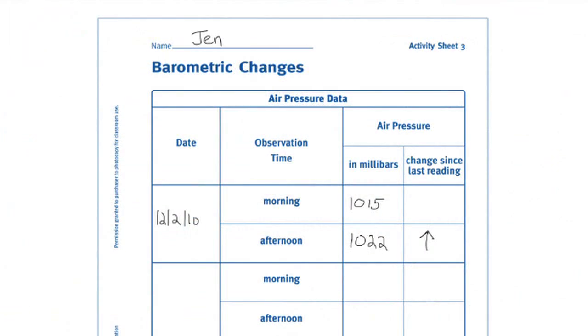Distribute Activity Sheet 3 and explain that they will measure and record the air pressure twice each day, at the same time that they measure and record the temperature. Instruct students to record the temperature on the temperature data sheet and the air pressure on the air pressure data sheet.